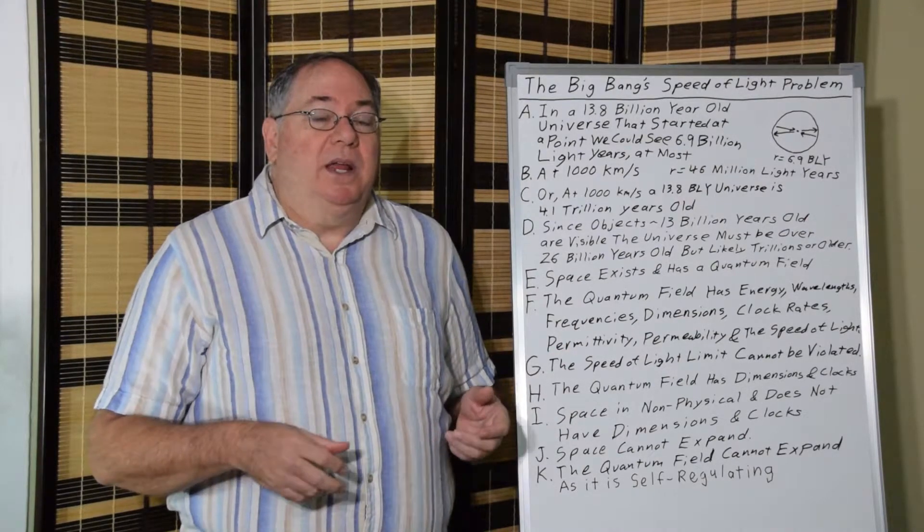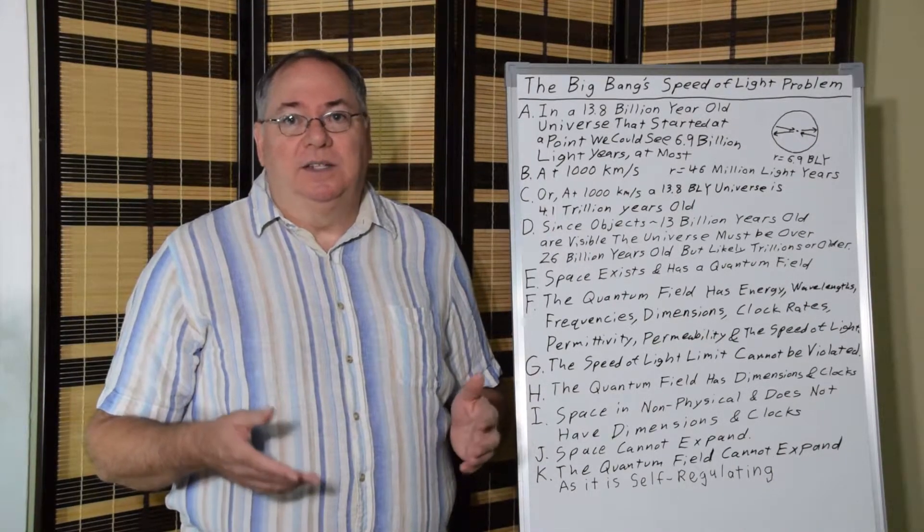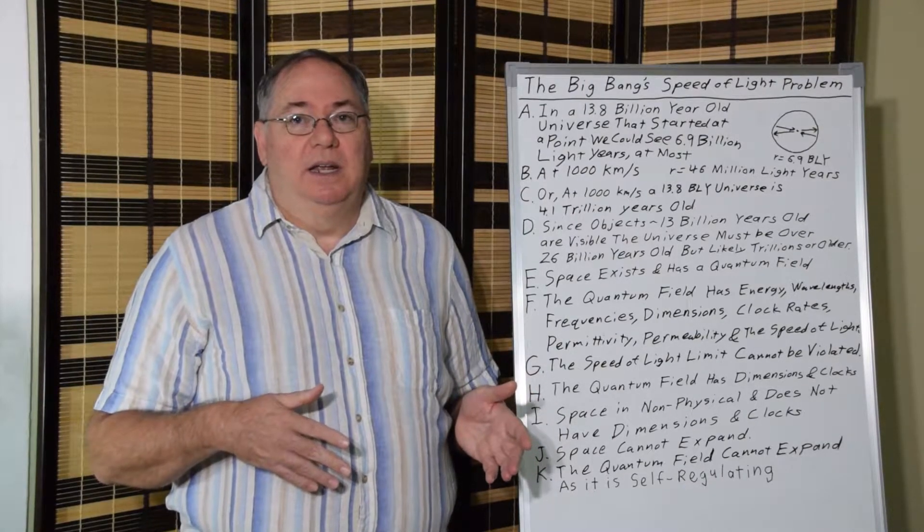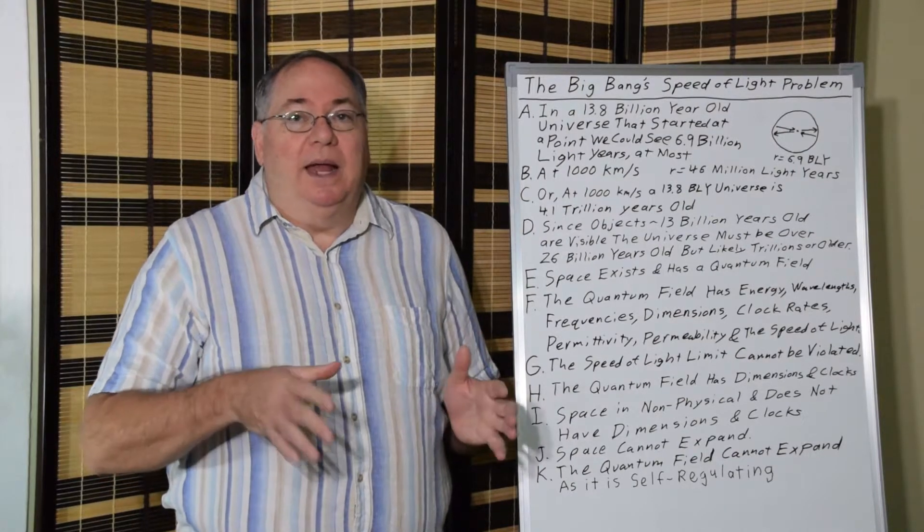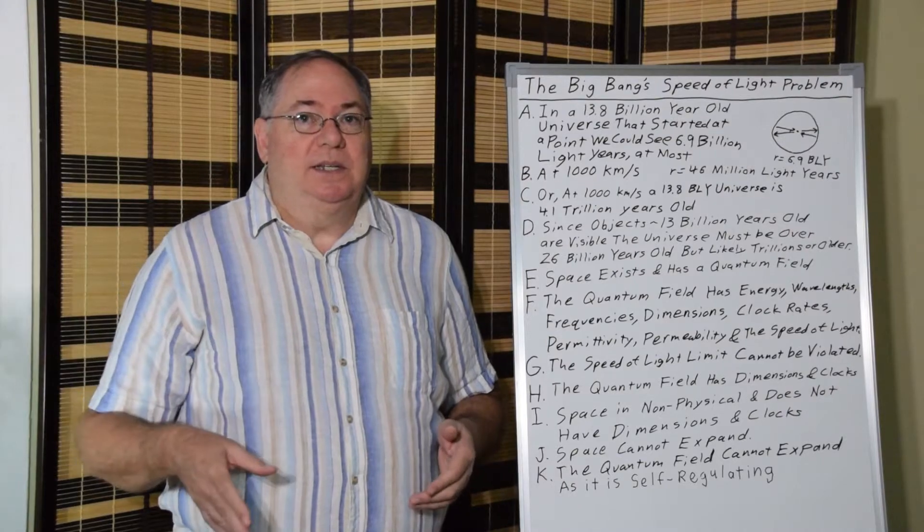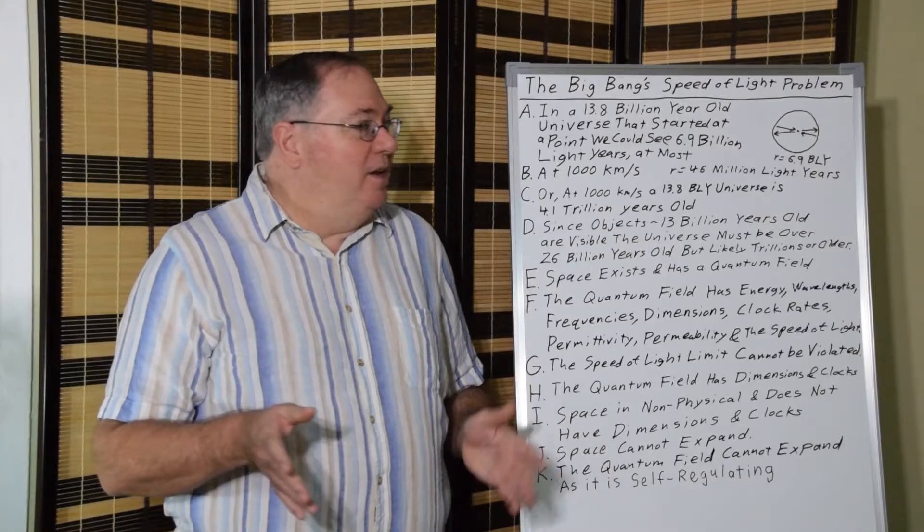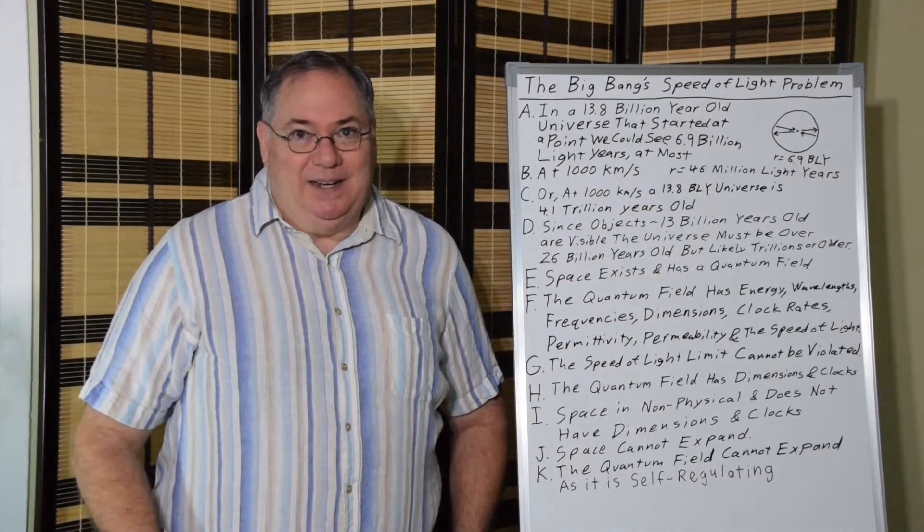And then we can also look at the local velocities. The local velocities of galaxies relative to each other are mostly less than 1,000 kilometers per second. And while that speed increases based on the Hubble scale with distance. If that were the normal velocity throughout the universe, we'd only need about 46 million light years in size.